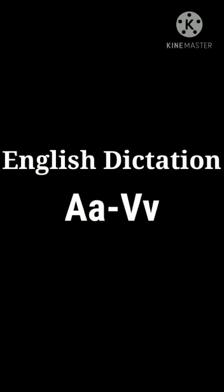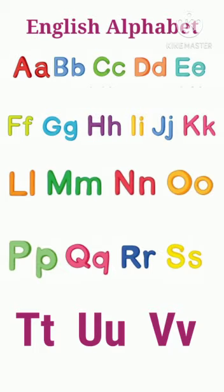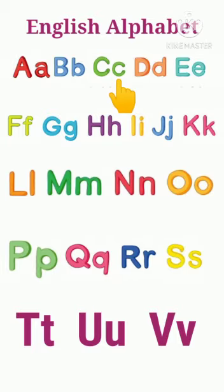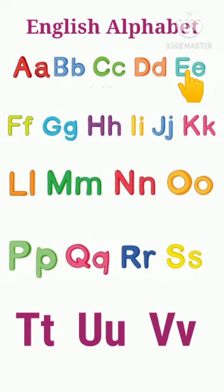Aaj hum English dictation kerienge A to V. First we read these alphabets. Capital A, small a, a. Capital B, small b, b. Capital C, small c, k. Capital D, small d, d. Capital E, small e, a.